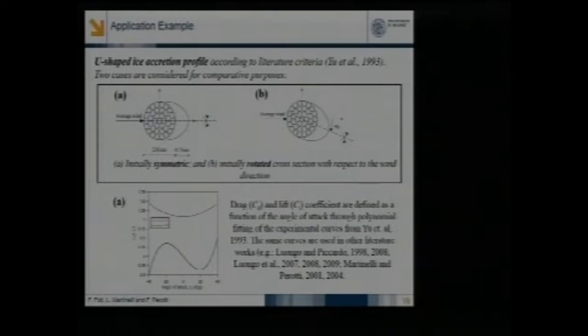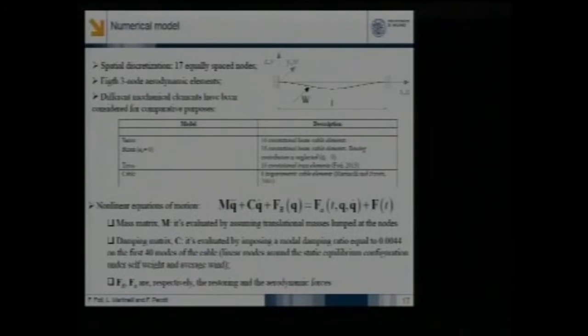We assume the cross-section of the cable is surrounded by an ice deposit. We assume here a standard literature criteria to model the ice accretion. This is a shape file taken from work of Professor Luongo and co-workers, and here you see drag and lift coefficients for the section as a function of the angle of attack.